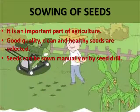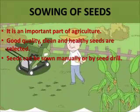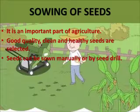Next we have sowing of seeds. Healthy, good quality seeds are sown either manually or with the help of machines called seed drills. Seeds should not be planted too deep or too close to each other, otherwise they will not grow properly.